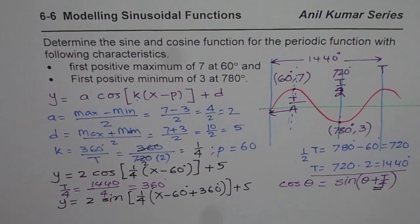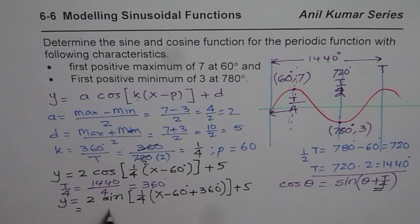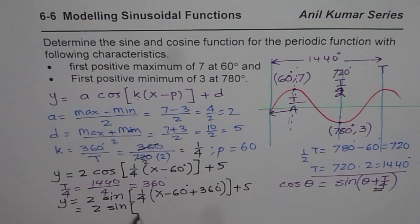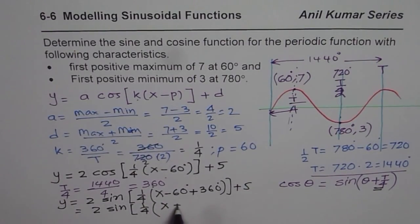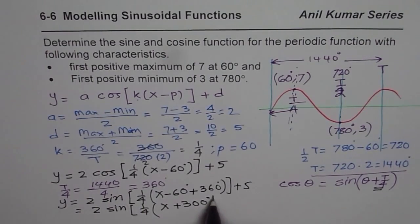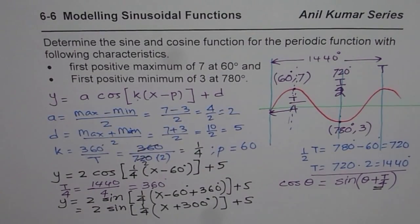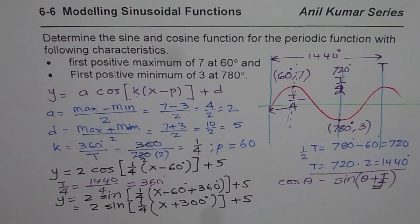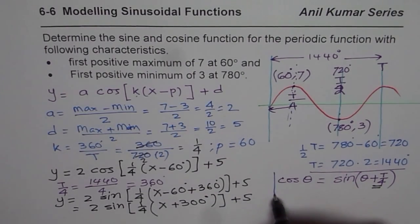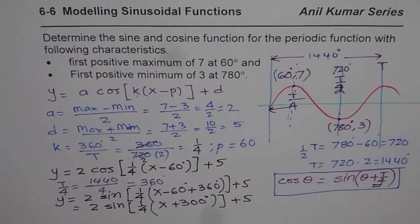So the final sine equation is y = 2·sin(1/4·(x − 300)) + 5, since 360 − 60 = 300. That is how you can get your sine function once you have the cosine function. This little relationship helps you translate an equation from one form to the other very quickly.